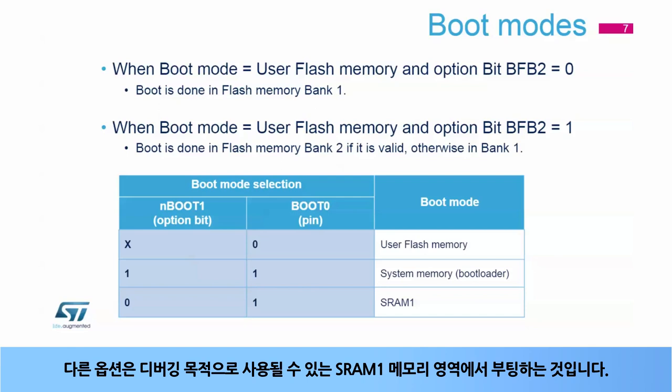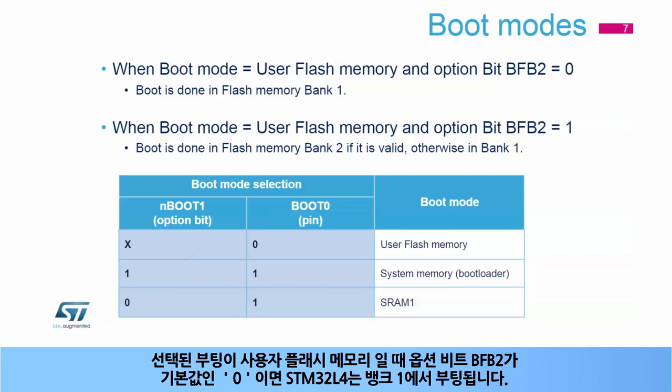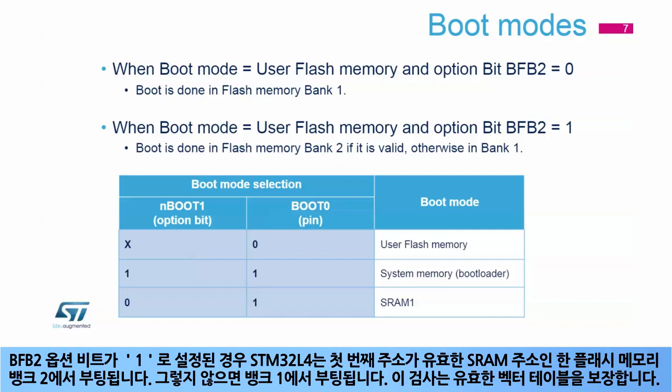When the selected boot is the user flash memory, the STM32L4 boots from bank 1 if the option bit BFB2 is zero (the default value). If the BFB2 option bit is set to one, the STM32L4 boots from flash memory bank 2, as long as its first address is a valid SRAM address; otherwise, it boots from bank 1. This check ensures a valid vector table.